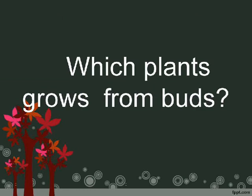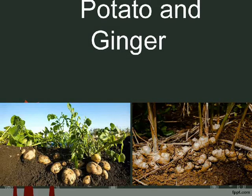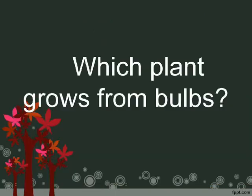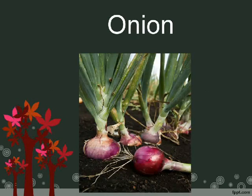Which plants grow from buds? Potato and ginger. Which plant grows from bulbs? Onion.